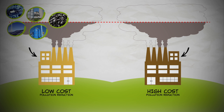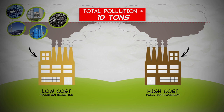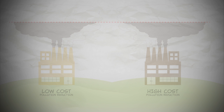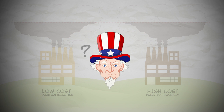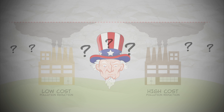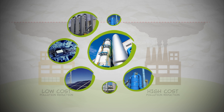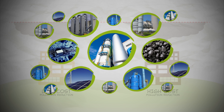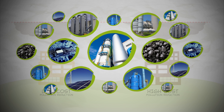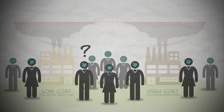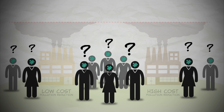If we do this, we can reduce pollution by exactly the same amount as before, but while wasting fewer other resources. Unfortunately, the government doesn't know which plant is the low-cost plant. There are lots of ways of reducing pollution, lots of substitutes, and lots of substitutes for substitutes. No one person knows all the trade-offs — information is dispersed.